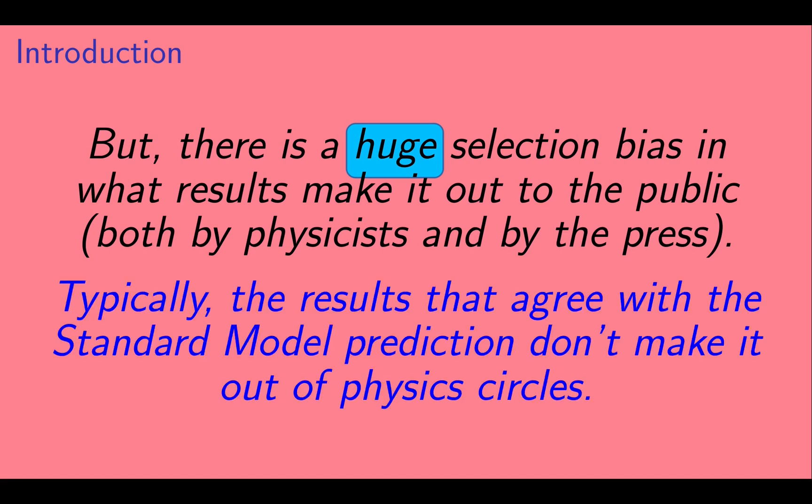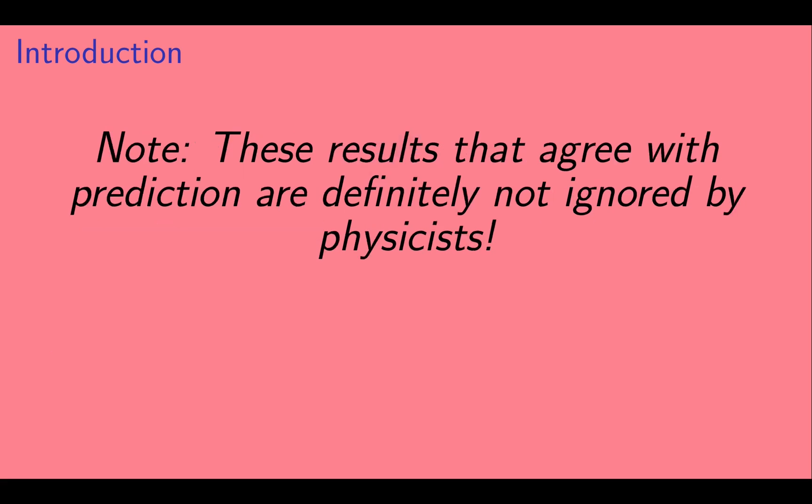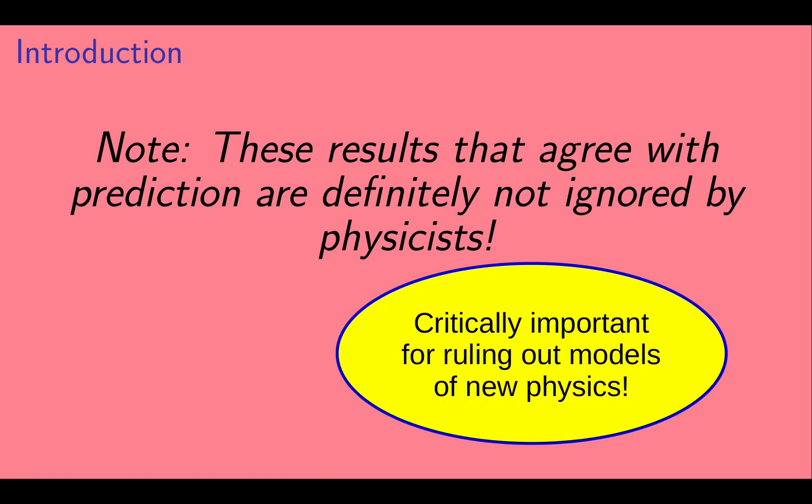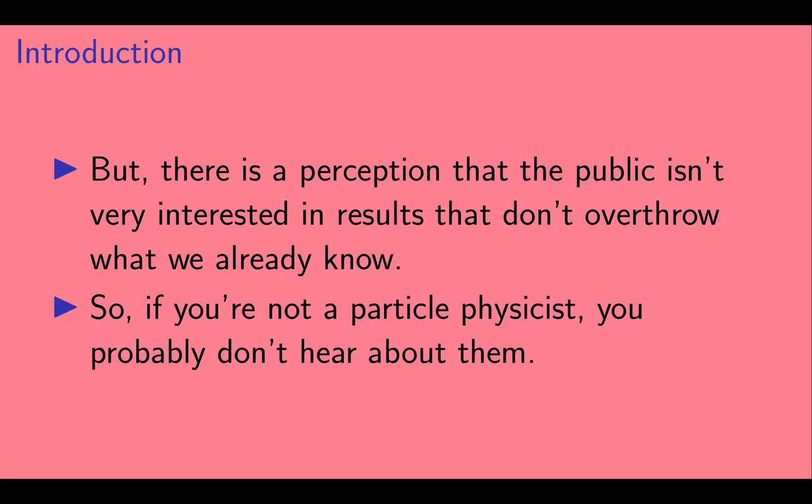Generally, the experimental results that agree with the prediction of the standard model don't make it out of physics circles. Now, I should point out that I don't mean that the results that agree with the standard model prediction are ignored by physicists. These results are published, just not publicized widely to non-physicists. Those results are critically important to physicists, who use them to rule out models of new physics that have been proposed. But there is a perception that the public isn't interested in results that don't overthrow what we already know. So if you're not a particle physicist, you probably don't hear about these results.